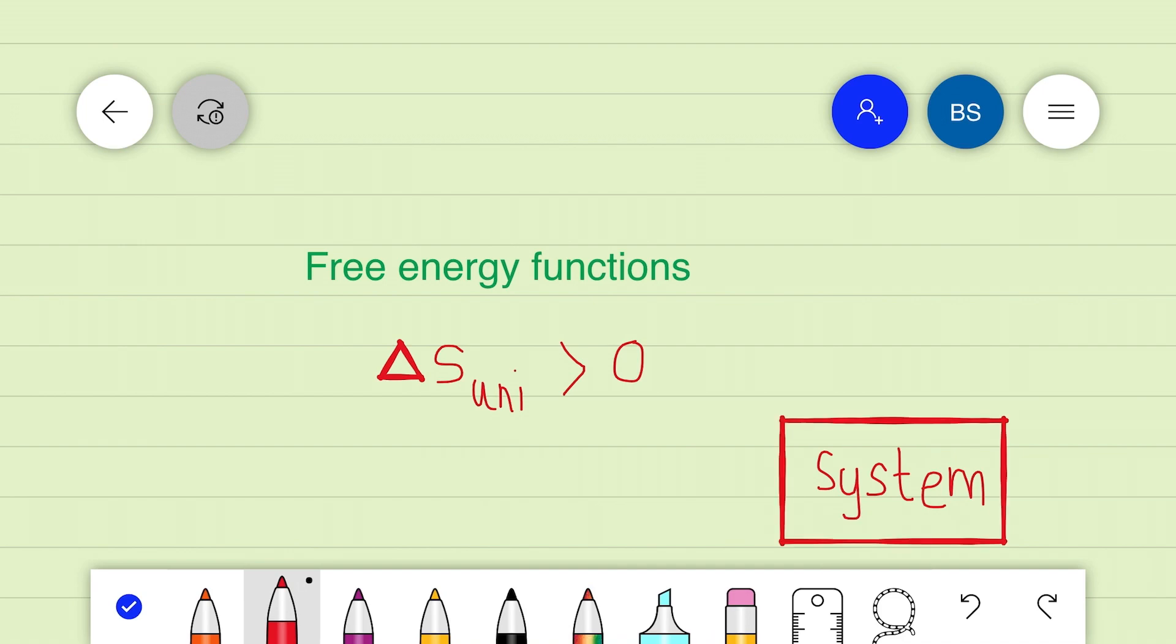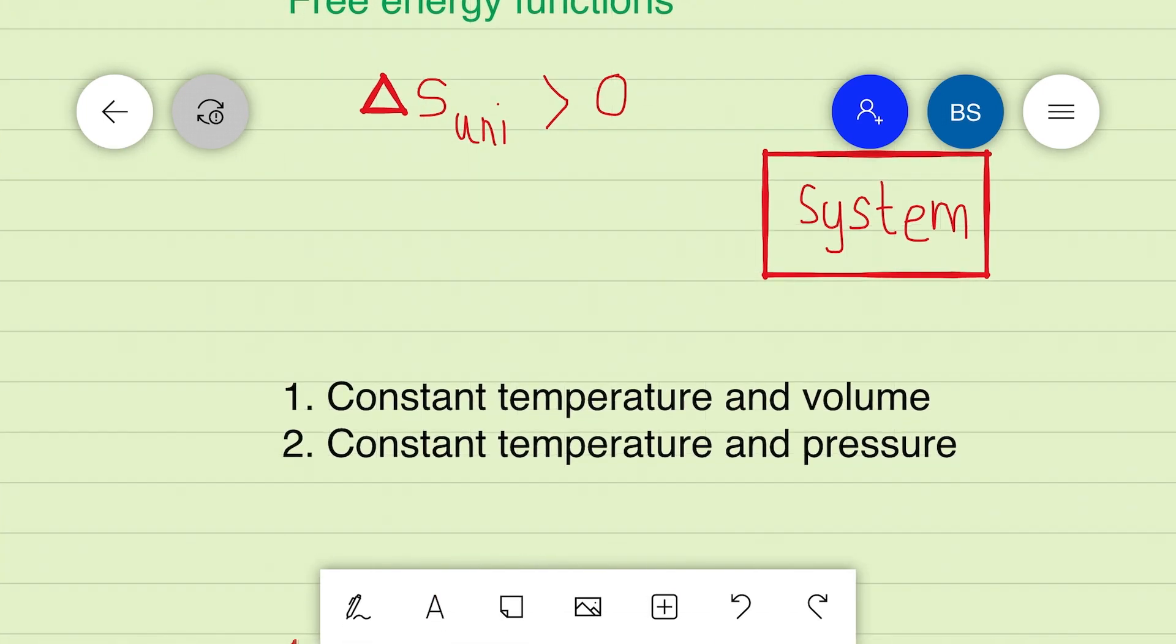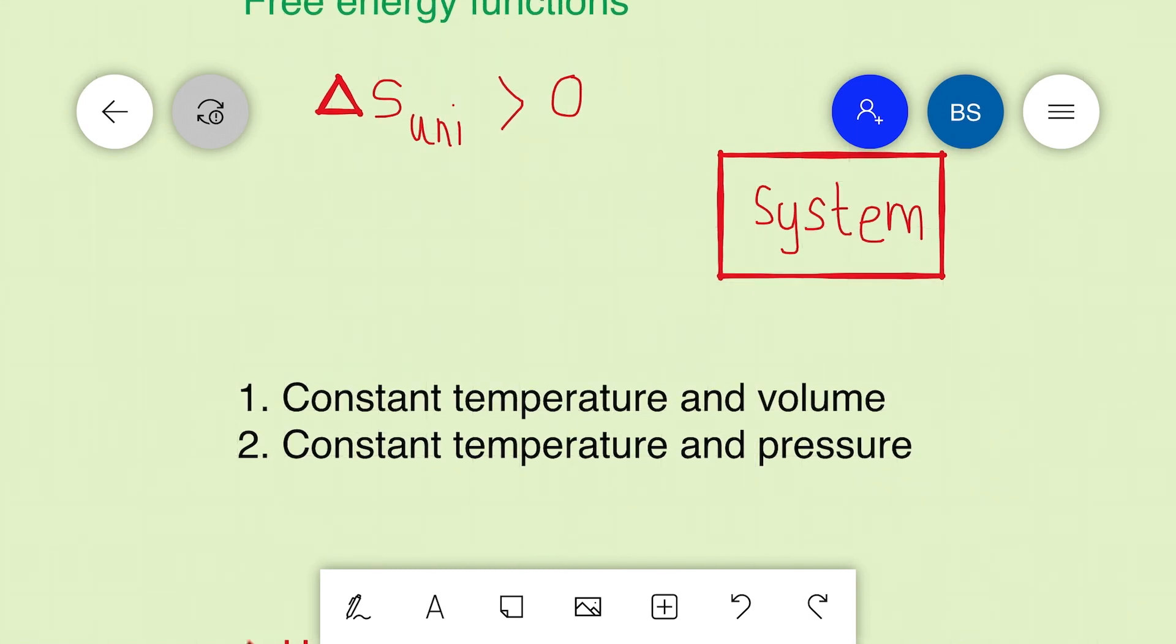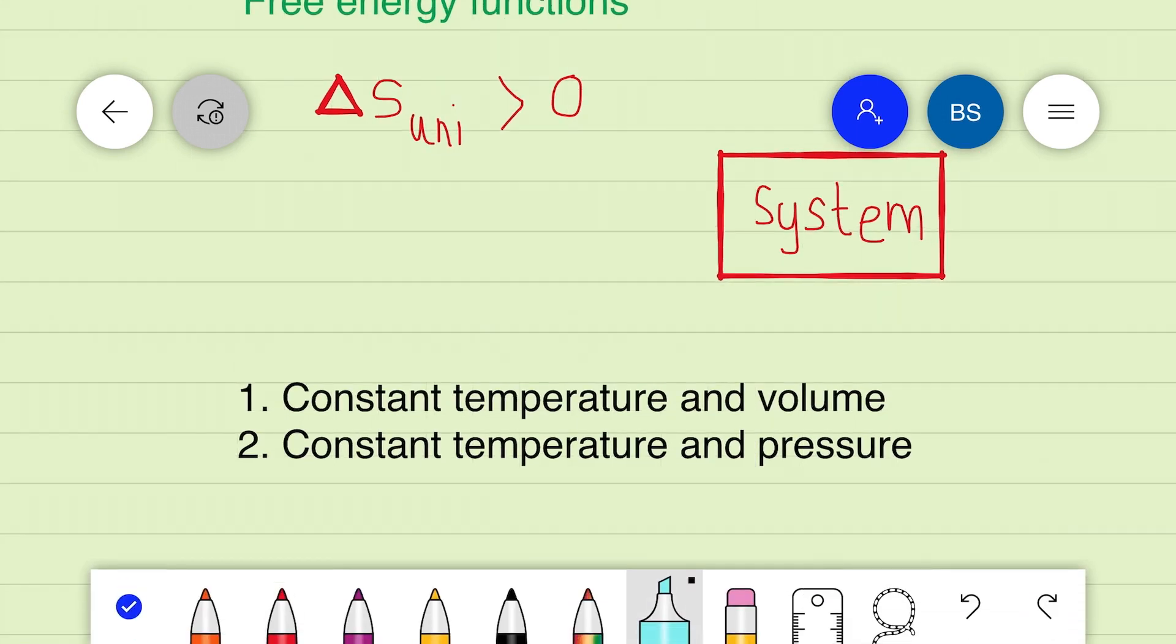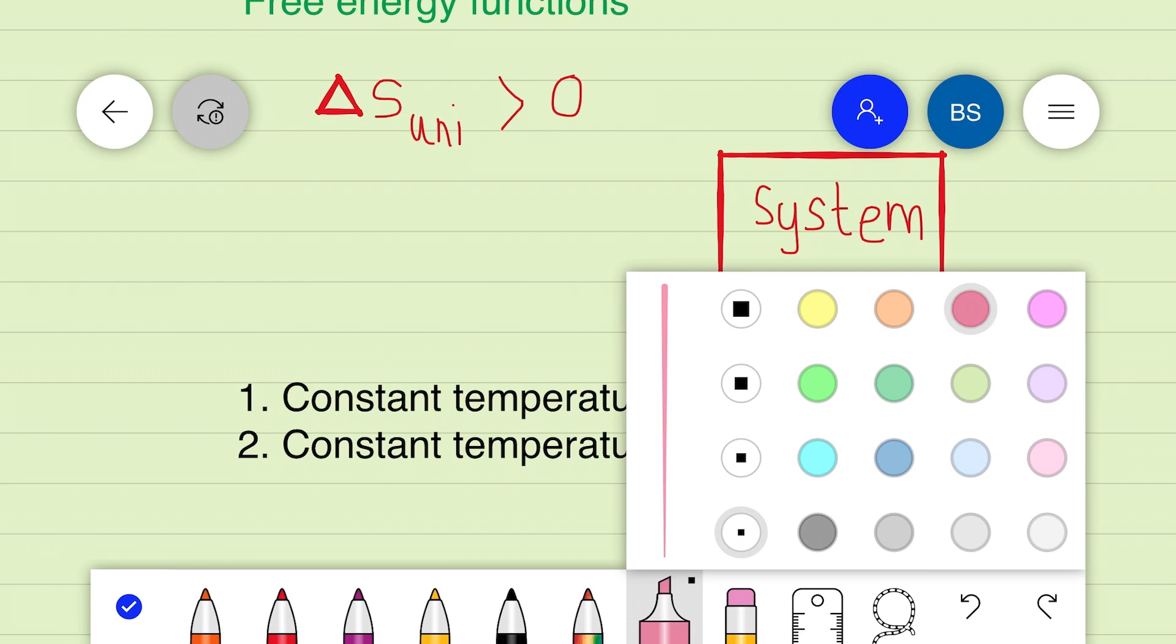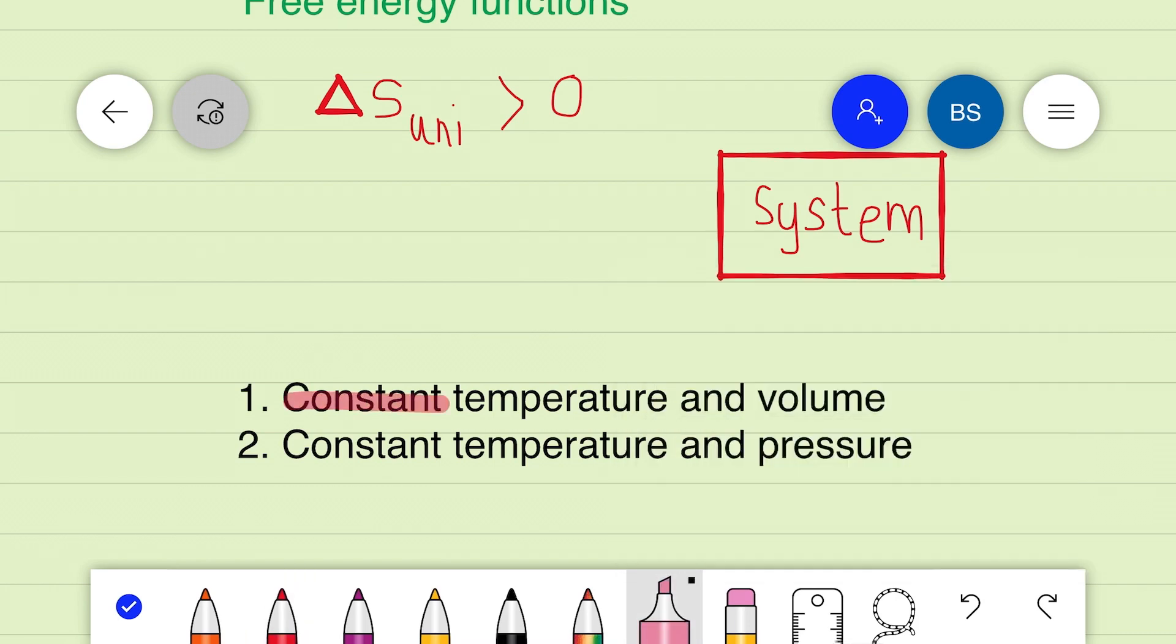To make it more convenient to do the job, processes imposing constraints upon the system are considered. The constraints being constant temperature and volume, or constant temperature and pressure.